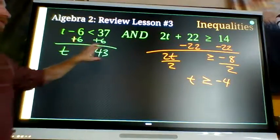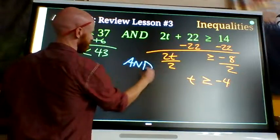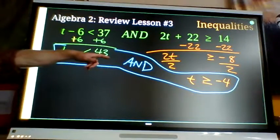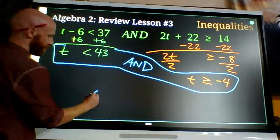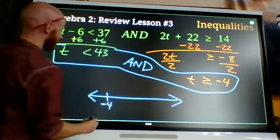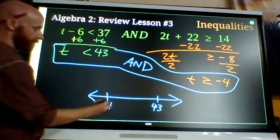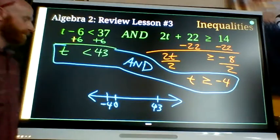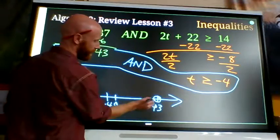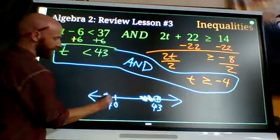I need this to be true and that to be true so my final answer includes both. T is smaller than 43 but it's bigger than negative 4. If I want to show that on a number line, I show both of my key points so negative 4 and 43. I also usually put zero on the number line. Zero is going to be a lot closer to negative 4 than it is to 43. T must be smaller than 43, it's not allowed to equal 43, less than, and it must be greater than negative 4, it's allowed to equal negative 4, greater than or equal to.